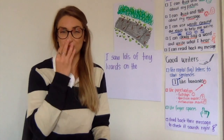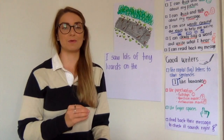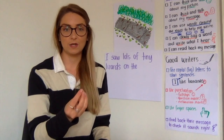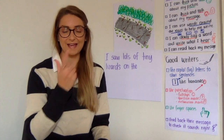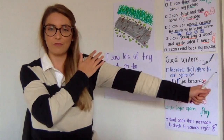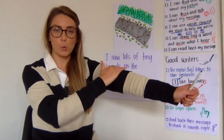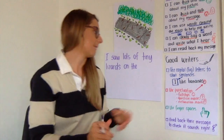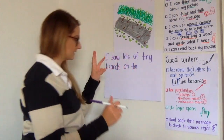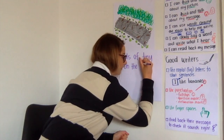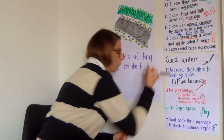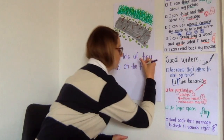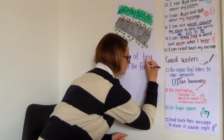Now we're going to stretch it out like bubble gum. F... ooo... t. I can hear a few sounds that I know. F, ooo — like 'book' — t. So three sounds that I hear: I can hear an F, then O like 'book', which is the double-O. Foot.